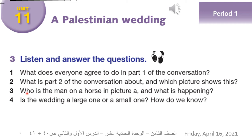We need to read the questions and answer them after listening and reading the passage or the conversation. Period 1, Activity 3. One: What does everyone agree to do in part one of the conversation? Two: What is part two of the conversation about, and which picture shows this? Three: Who is the man on a horse in picture A and what is happening? Four: Is the wedding a large one or a small one? How do we know?